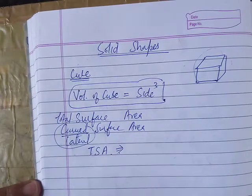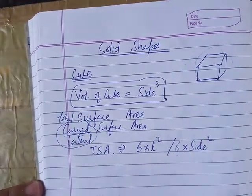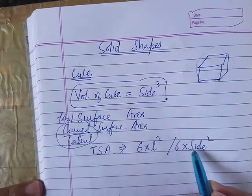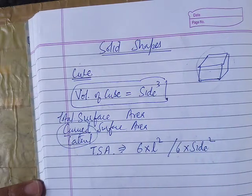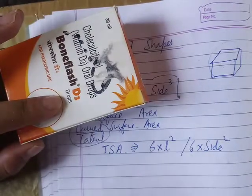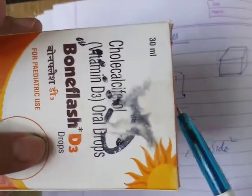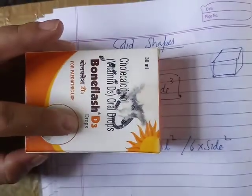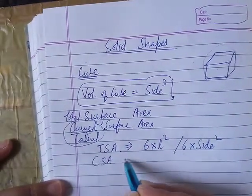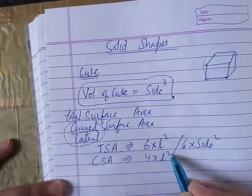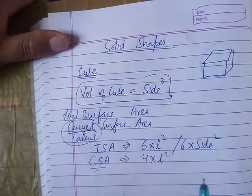The formula is 6 into L squared. L squared is 6 into side squared. Total surface area equals 6 times side squared. The curved surface area is 4 into L. The top and bottom are excluded.